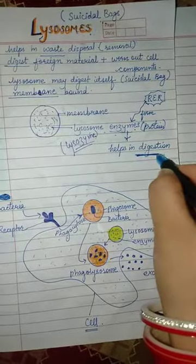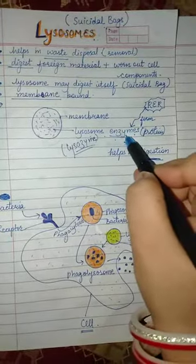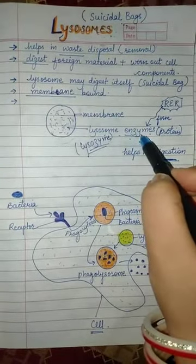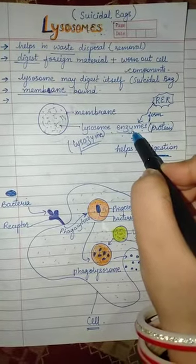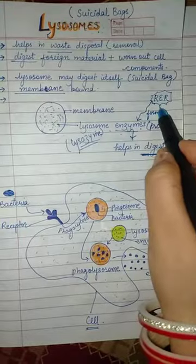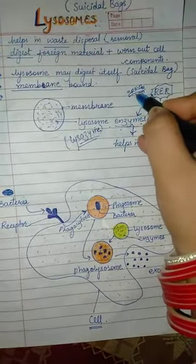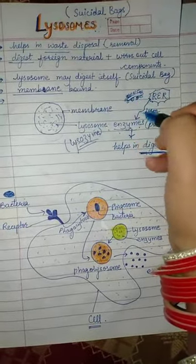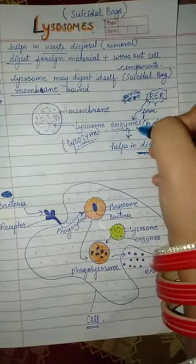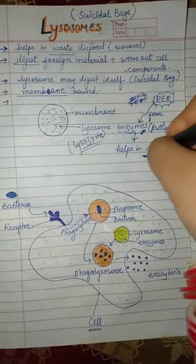Similarly, these enzymes help in digestion. But who makes these enzymes? In the previous lecture we studied about rough endoplasmic reticulum. Rough endoplasmic reticulum has ribosomes, and ribosomes help in protein synthesis. That protein acts as an enzyme, and that enzyme helps in digestion.